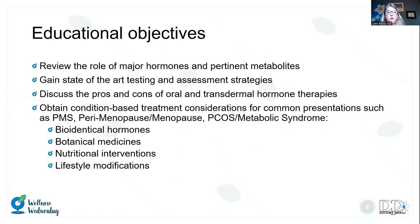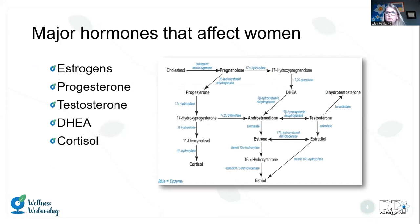Our objectives today: we're going to review the role of the major hormones and the pertinent metabolites in terms of women's health. We'll talk about testing and assessment strategies, discuss some of the pros and cons of oral versus transdermal hormone therapies, and then we will specifically look at PMS, perimenopause, menopause, PCOS, and metabolic syndrome. These are condition-based treatment times in a woman's life where specific treatments would be considered.